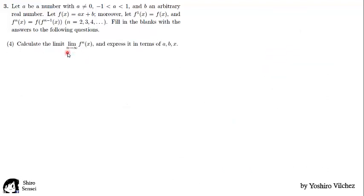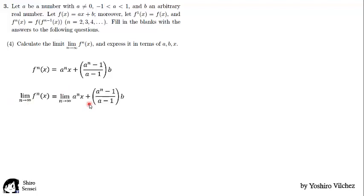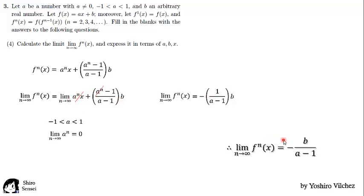Next question: calculate the limit as n approaches infinity of fn of x, and express it in terms of a, b and x. We already know fn of x from problem 1. We apply the limit as n goes to infinity. Since a is between minus 1 and 1, a to the n goes to 0 as n approaches infinity. Replacing and canceling the a to the n terms, we finally get minus b over (a minus 1).